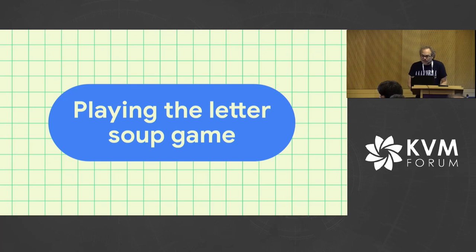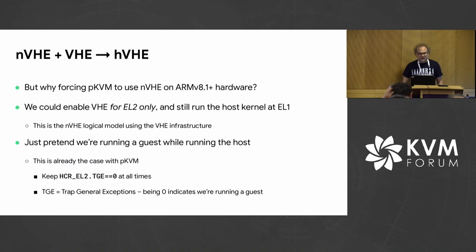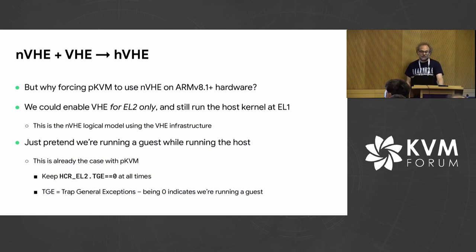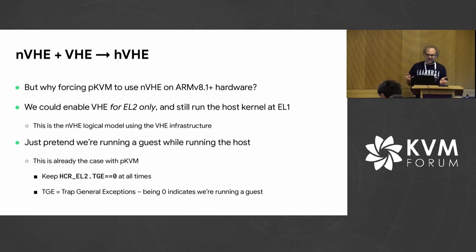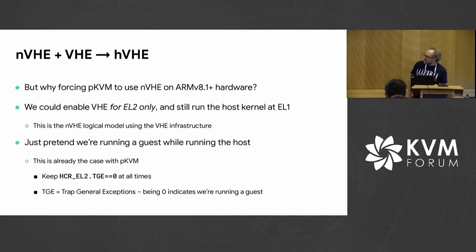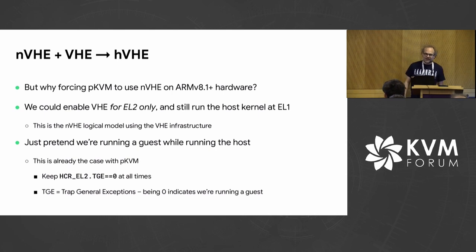So we need to play a bit of a game — the letter-soup game. We have NVHE, we have VHE, how about we invent HVHE? None of that is architectural; I made this up. The idea is: why do we force PKVM to use the NVHE model on hardware that actually supports VHE? One thing we could do is enable VHE for EL2 only and still run the kernel at EL1. It's basically the NVHE logical model but using the VHE infrastructure. We just have to pretend we're running a guest when we're actually running the host. We just need to set a bit in a system register — the TGE bit, which means Trap General Exceptions — set that to zero, which tells the architecture: now I'm running a guest.